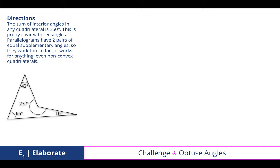Here's a challenge activity. The sum of interior angles in this quadrilateral is 360, which we know if there are four angles of a four-sided shape, obviously, that they add up to 360, just like a square, rectangle, parallelogram. This is pretty clear with rectangles. Parallelograms have two pairs of equal supplementary angles, so they work too. In fact, it works for anything, even non-convex quadrilaterals. So in this case, we see that there's an obtuse angle, in fact, greater than 180 degrees, but again, if we add all four of those up, it still adds up to 360 degrees.